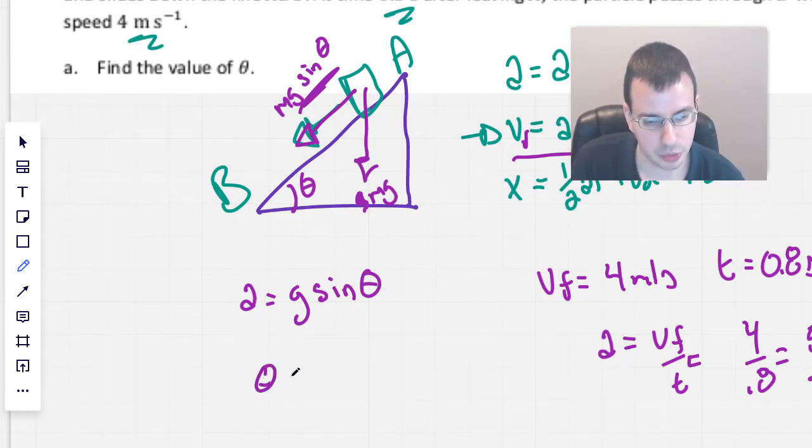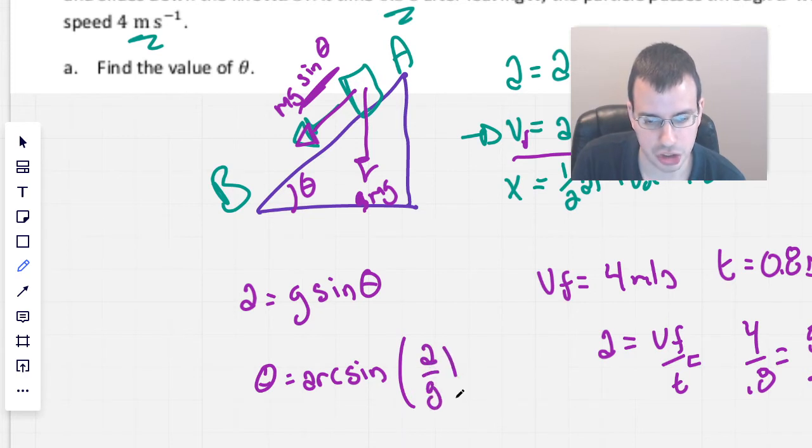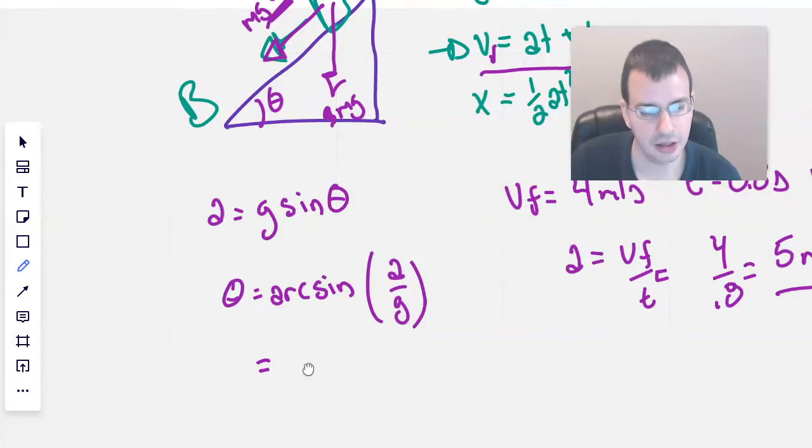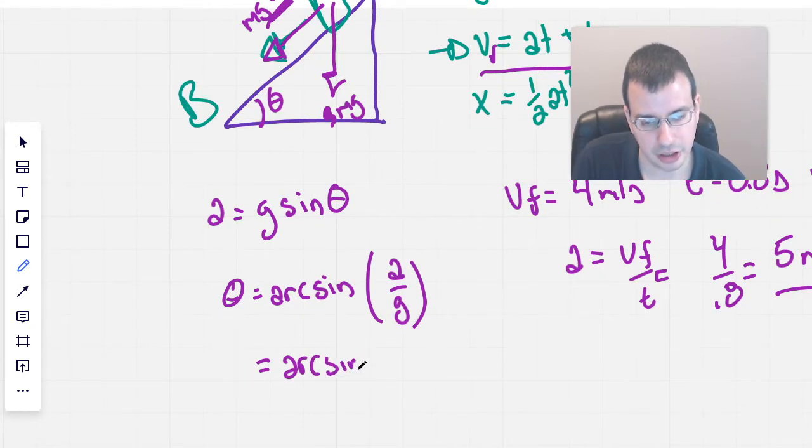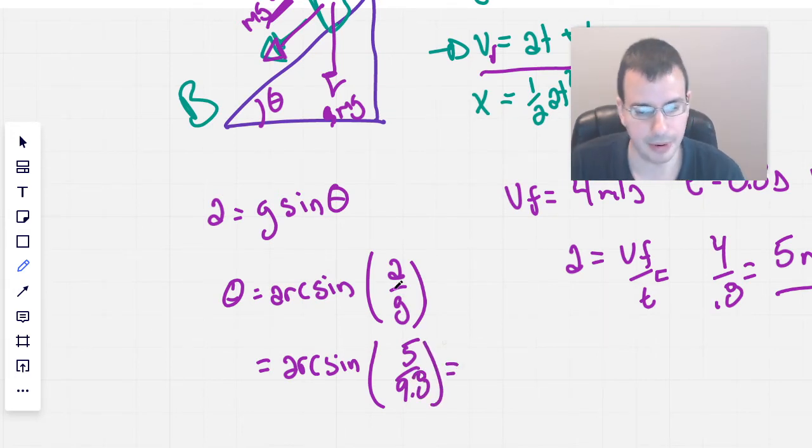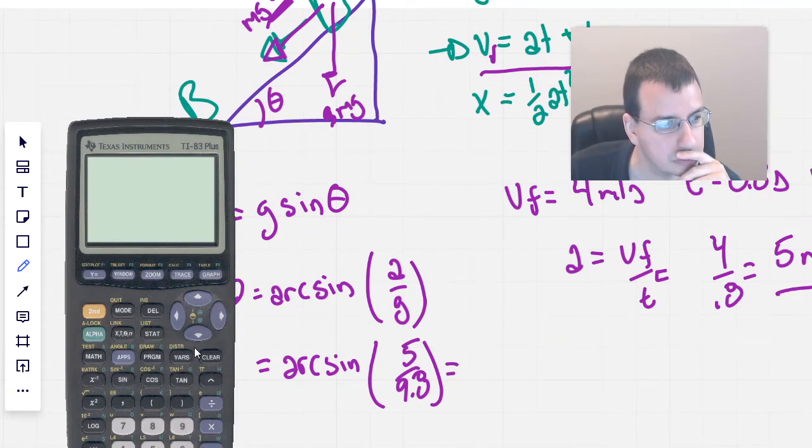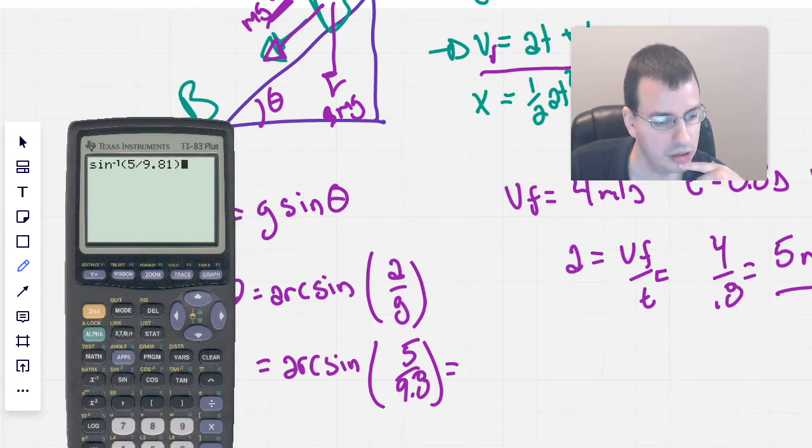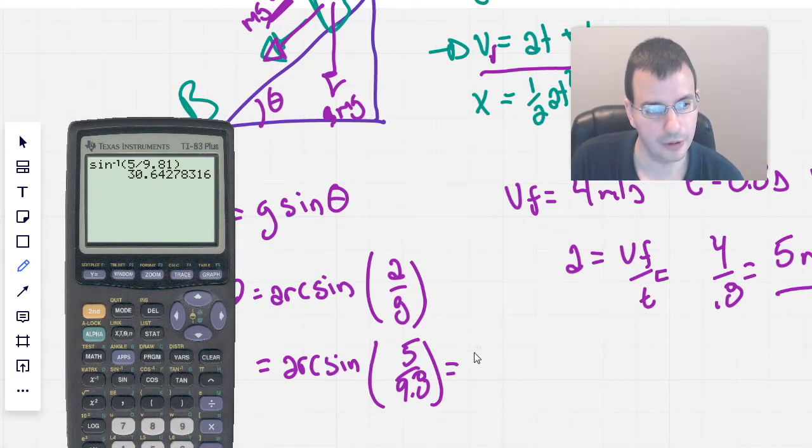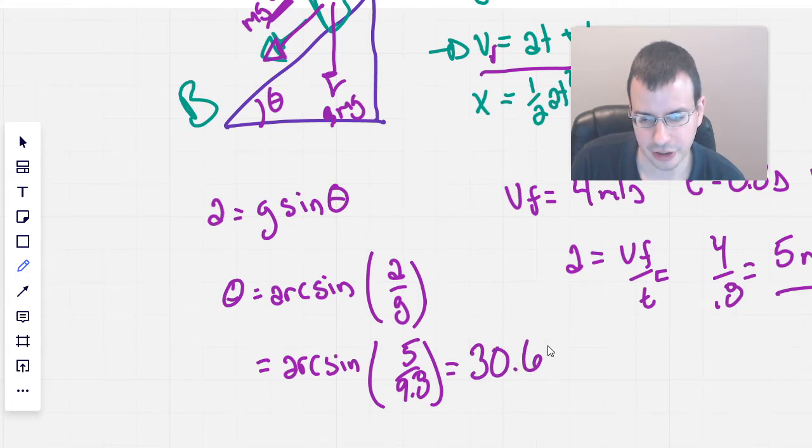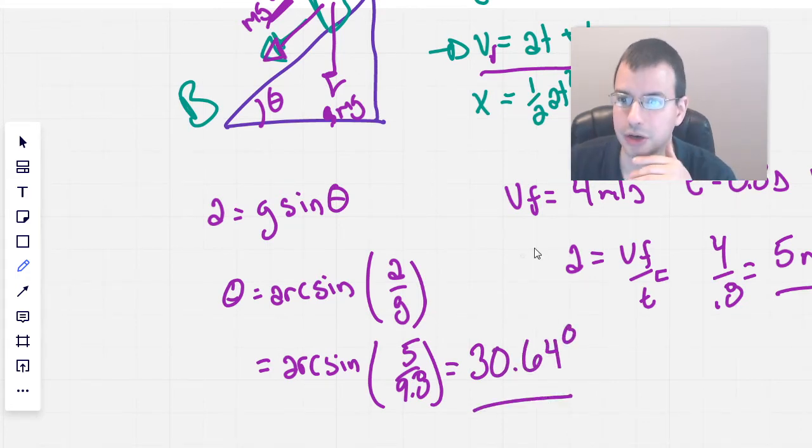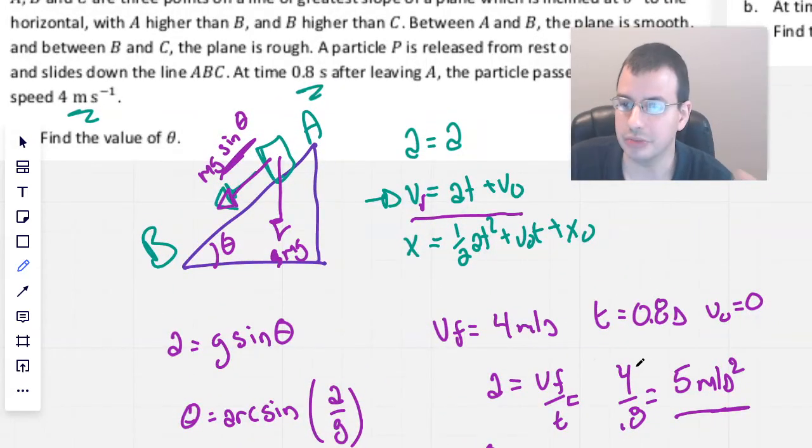We can solve for theta, which would be the arc sine, the inverse sine, of a over g. So this will be inverse sine of acceleration, which was 5 over 9.8. Second arc sine, 5 divided by 9.81. That gives us 30.64. That seems reasonable. 30.64 degrees. So now we know the theta. Find the value of theta. Got it. Excellent.